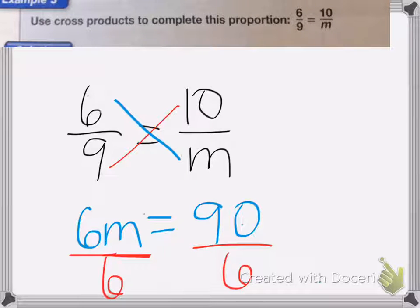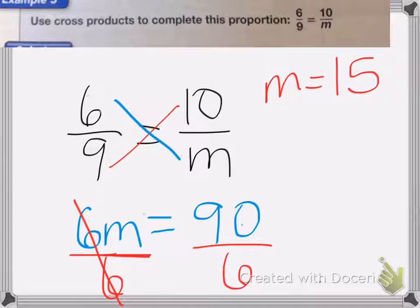Because whatever you do to one, you have to do to the other. Now the 6s cancel. So I end up with m equals 90 divided by 6. So 90 divided by 6 is 15. So m equals 15. So the proportion is 6 ninths equals 10 over 15.